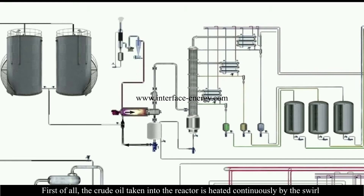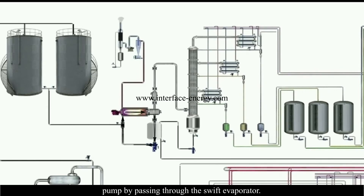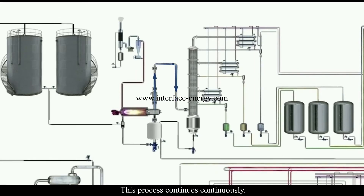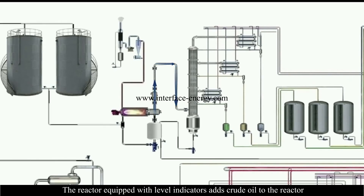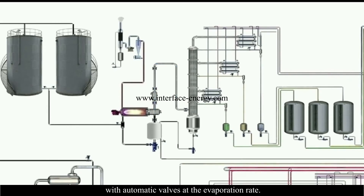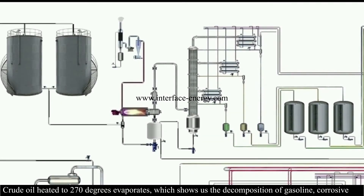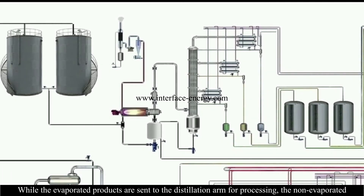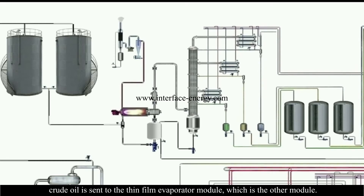The crude oil taken into the reactor is heated continuously by a swirl pump, passing through a swift evaporator. The heated crude oil evaporates and is sent from the vapor separator to the distillation column. This process runs continuously. The reactor, equipped with level indicators, adds crude oil automatically at the evaporation rate, maintaining the same level at all times. Non-evaporated crude oil is sent to the thin film evaporator module.